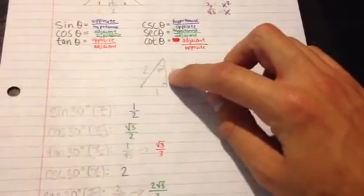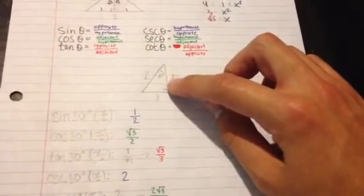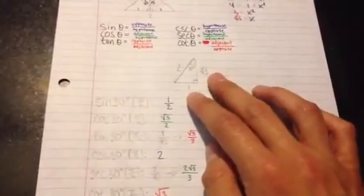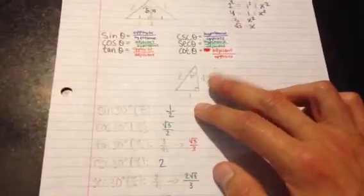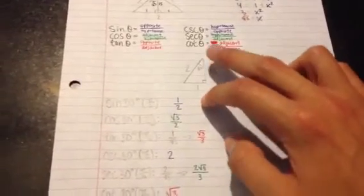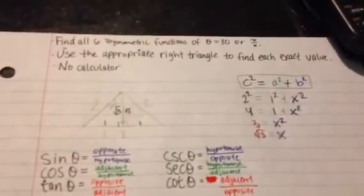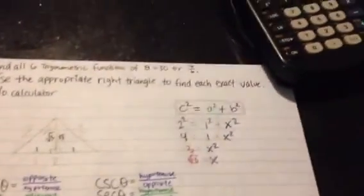So adjacent, square root of three, over the opposite side right over here. Sorry for the pause there, but the adjacent side is right over here to the angle, and the opposite side is on the opposite side of the angle. So square root of three over one is your final answer down here. And those are your six trigonometric functions for the angle theta equals 30 or pi over six.